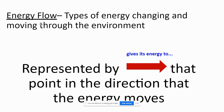Energy flow — there are types of energy changing and moving through the environment all the time. Energy goes from one thing to the next constantly. We show this energy flow with an arrow. In this presentation, I've used red arrows so that when you see a red arrow, you say the phrase 'gives its energy to.' The arrow points in the direction that energy moves. Replace the arrow with 'gives its energy to' and you'll do just fine understanding this.